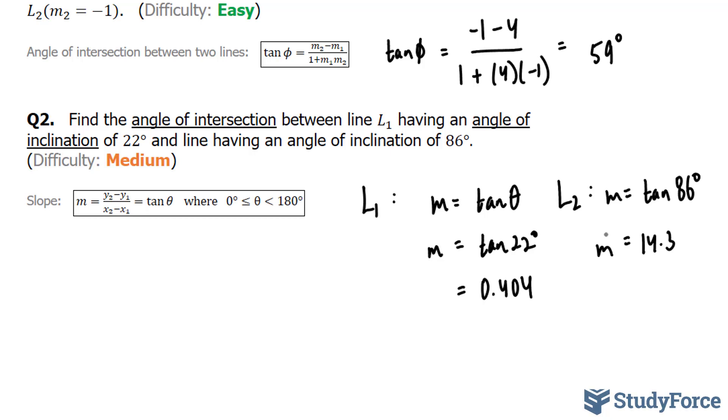Now that we found m1 and m2, we can go back and use this formula, where we have 14.3, that's our m2, minus 0.404 over 1 plus, and now we're going to multiply these, 0.404 times 14.3. Whatever answer you get after calculating this, you'll take the tangent inverse as we did in question one.